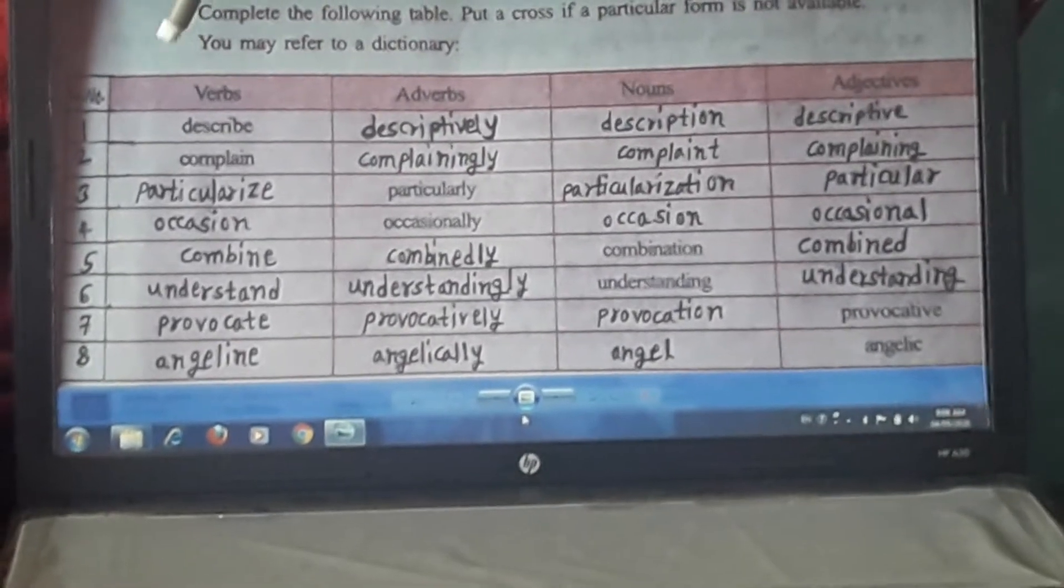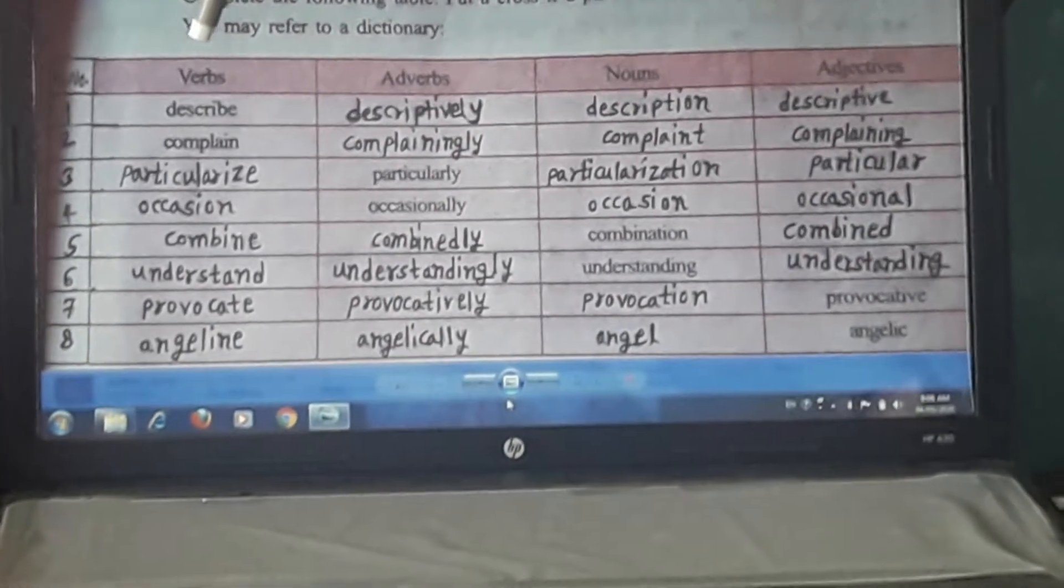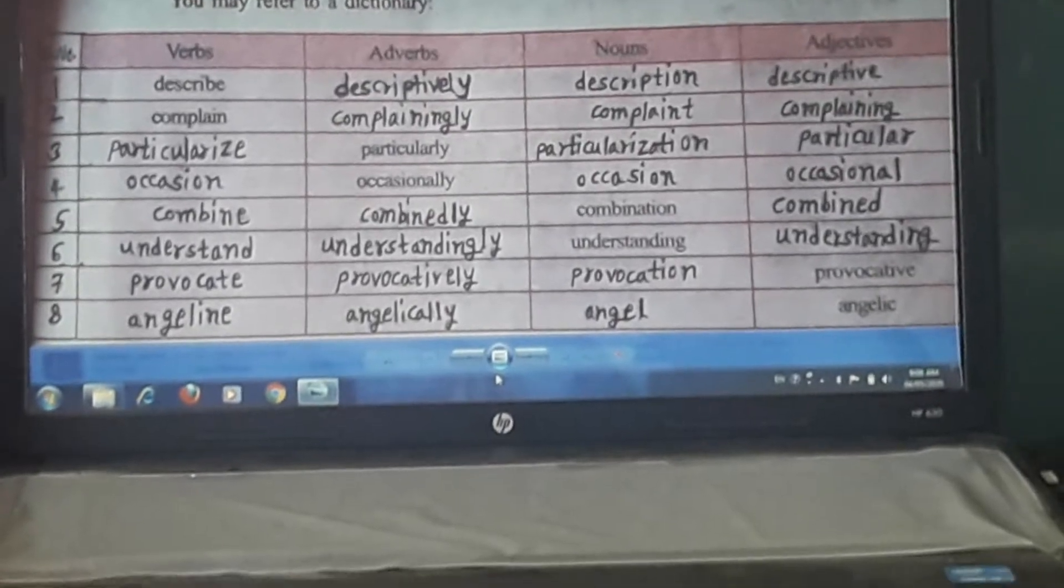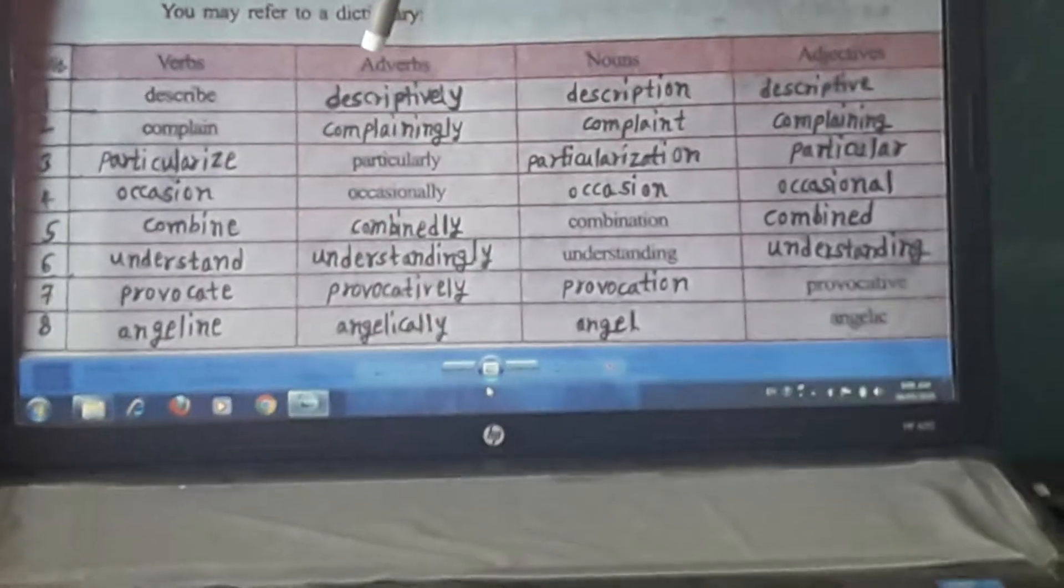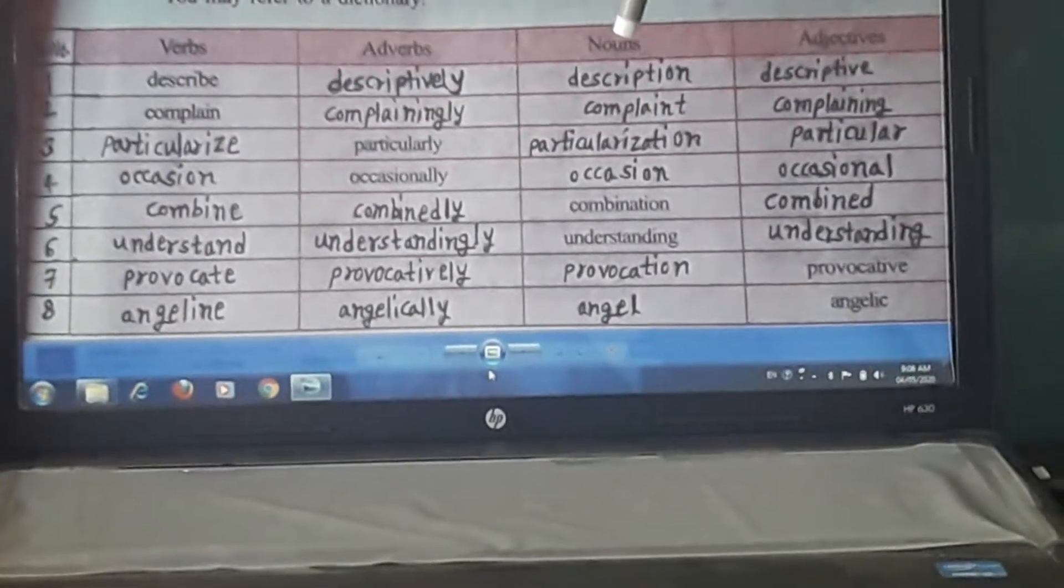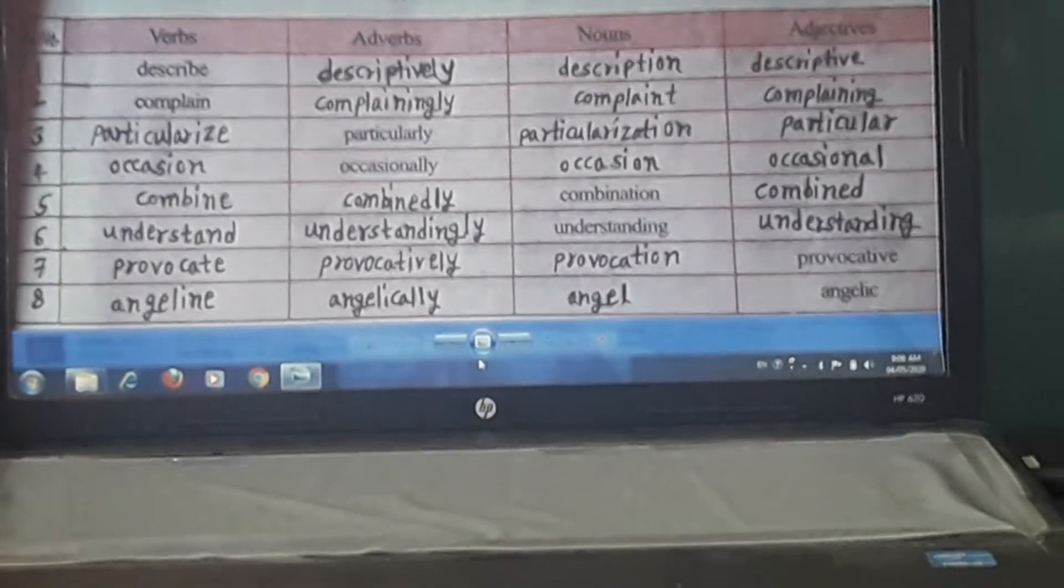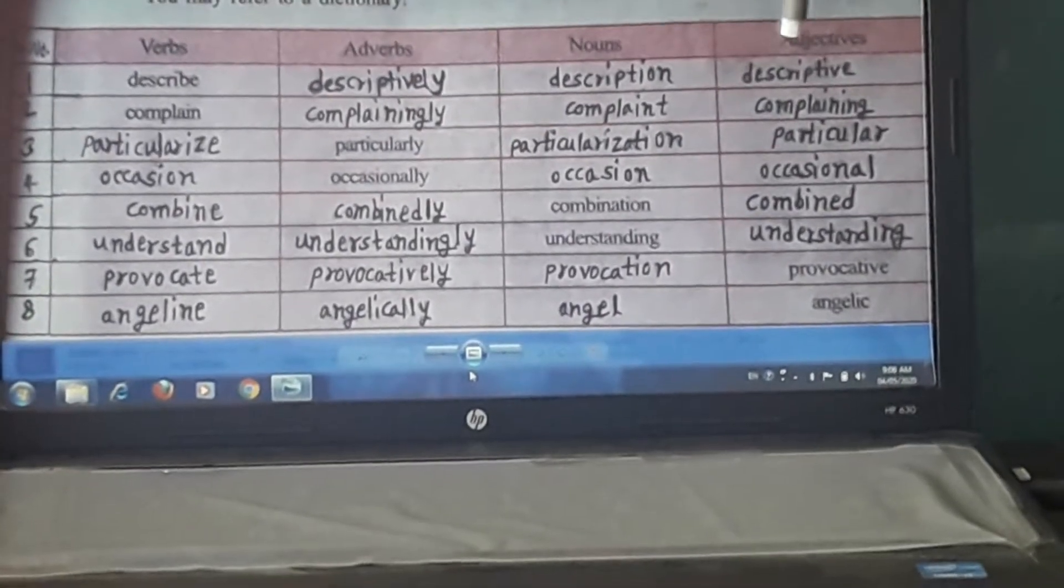Here, for this first one, the verb is 'describe'. Its adverb form is 'descriptively', its noun is 'description', and the adjective is 'descriptive'.